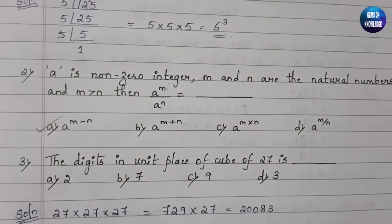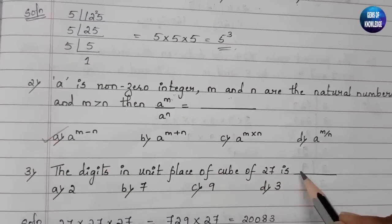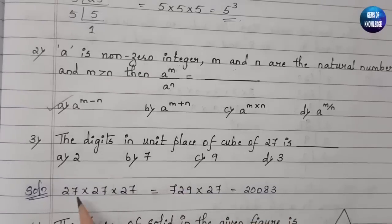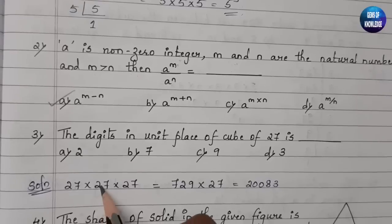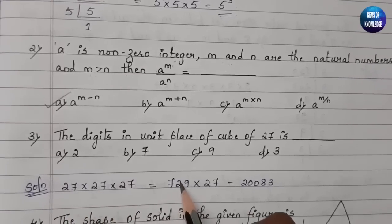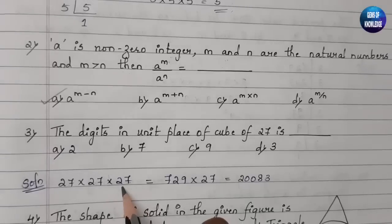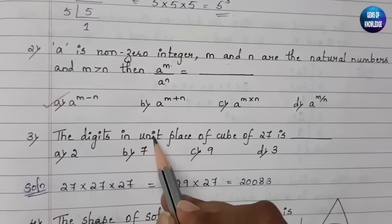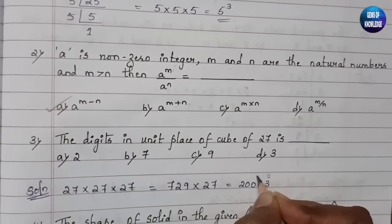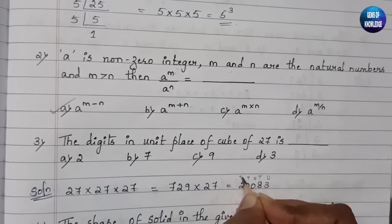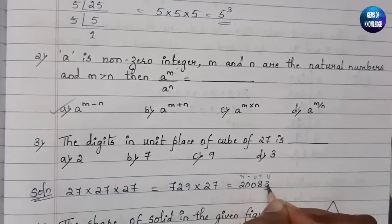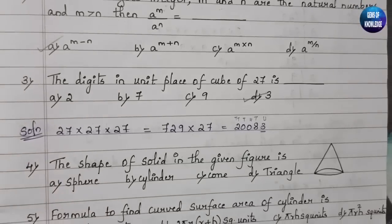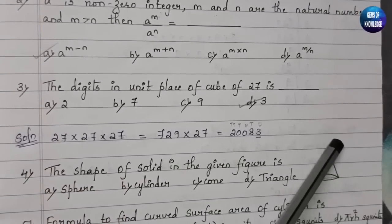The third question: the digit in the unit place of the cube of 27. We need to compute 27³, which means 27 × 27 × 27. First, 27 × 27 = 729, then 729 × 27 gives the final result. The unit place digit of the answer is 3, so our answer is 3.